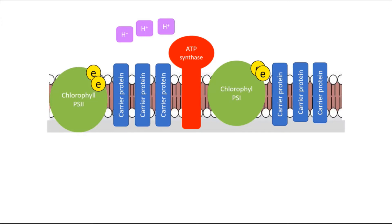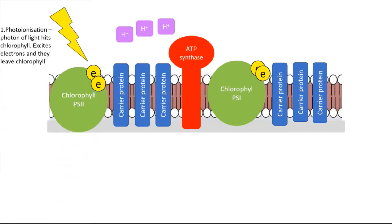Now we'll look at the light-dependent reaction in more detail. I'll be going through the main mark points from the specification. First, there is photoionisation — a photon of light from the sun hits the chlorophyll, and the electrons inside the chlorophyll are excited. 'Excited' is the keyword to use — they move to a higher energy level and leave the chlorophyll. This oxidises the chlorophyll, because if electrons leave, it's left with a positive charge. Remember OIL RIG: oxidation is loss, reduction is gain — so loss of electrons means oxidation.